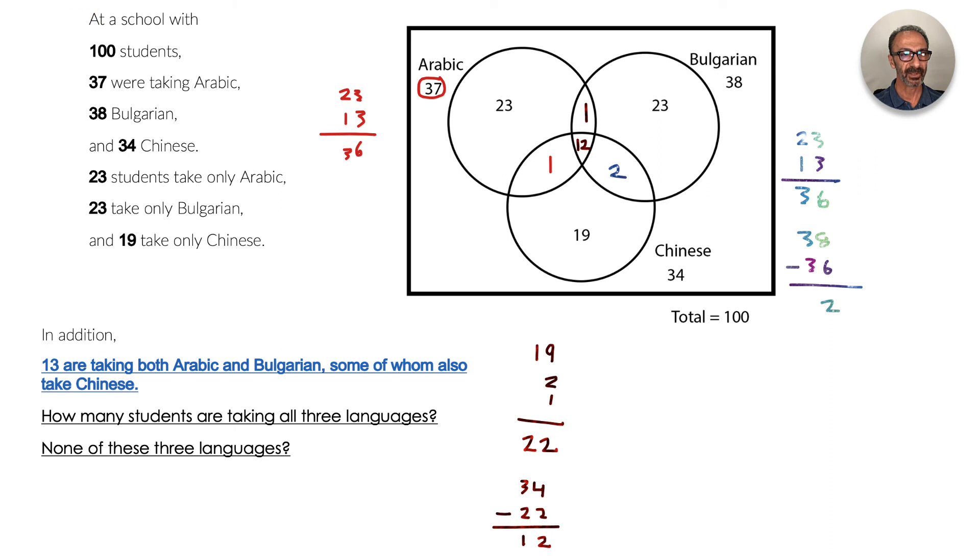Now let's answer the question. How many students are taking all three languages? That is this portion right here, which is 12.